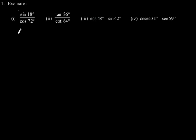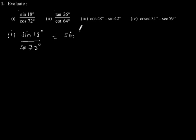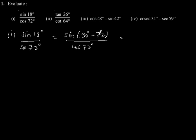Exercise 8.3, Question 1 — evaluate the first part: sine 18 degree divided by cos 72 degree. This can be written as sine (90 degree minus 72 degree) divided by cos 72 degree. So sine (90 degree minus 72 degree) becomes cos 72 degree divided by cos 72 degree, which is equal to 1.